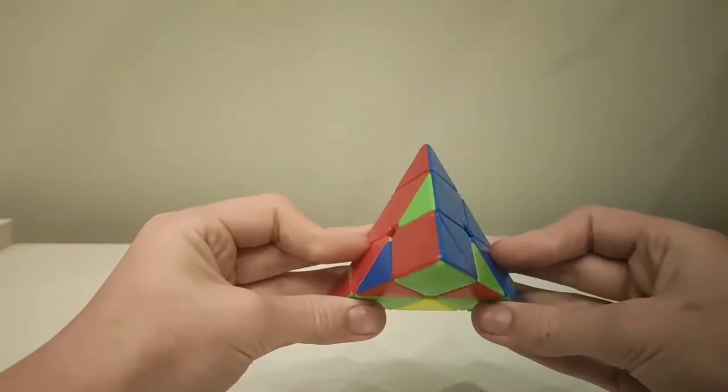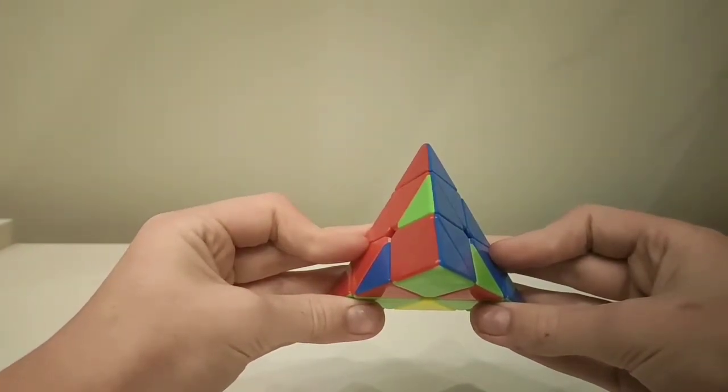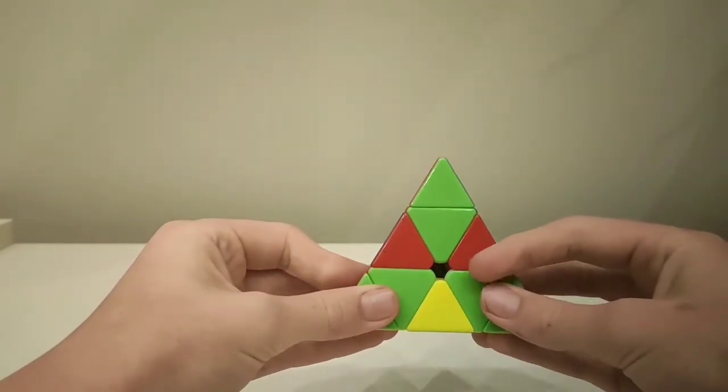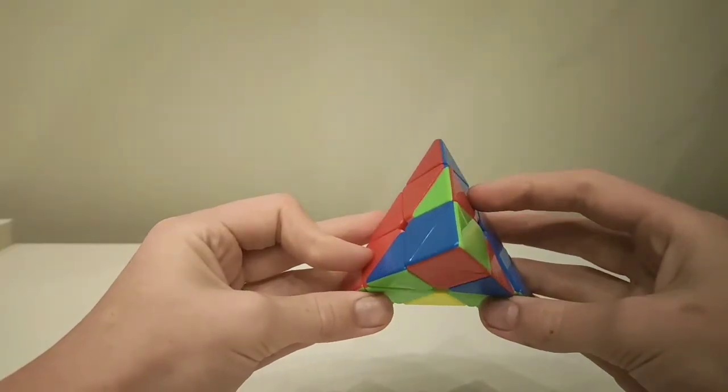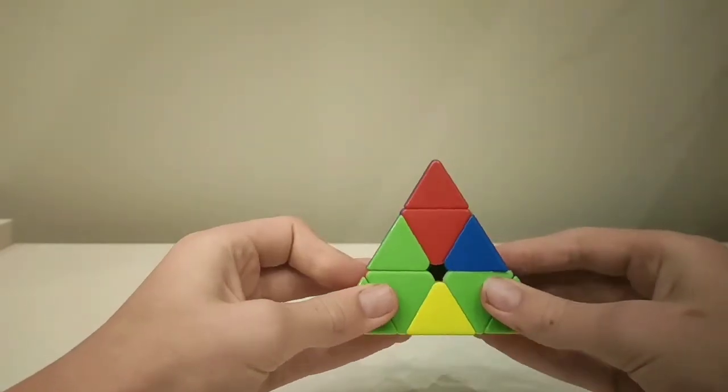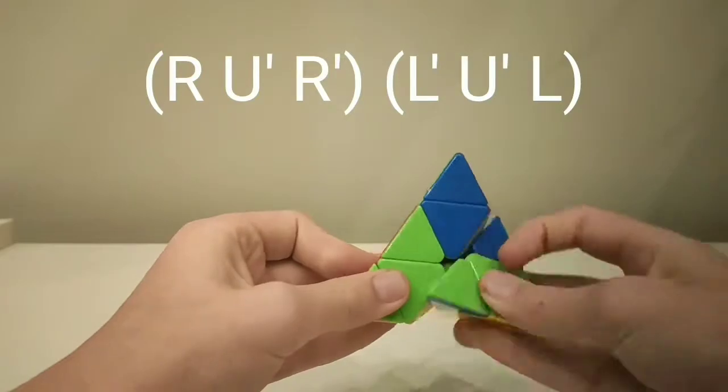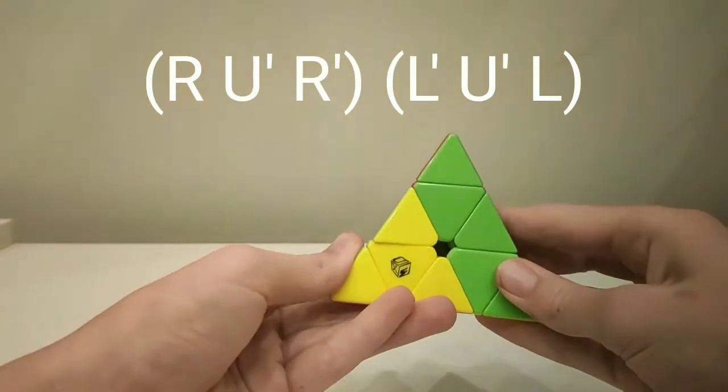This is the sixth case, where one piece in the top layer is flipped. This is the fifth case, where there is one bar pointing down to the right. You must hold it with the bar to your left. The algorithm for this is R U' R' L' U' L.